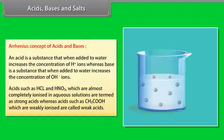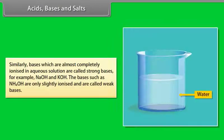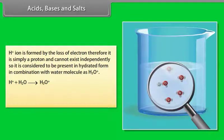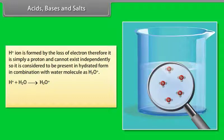Acids such as CH₃COOH which are weakly ionized are called weak acids. Bases which are almost completely ionized in aqueous solution are called strong bases, for example NaOH and KOH. Bases such as NH₄OH which are only slightly ionized are called weak bases. H⁺ ion is formed by the loss of an electron, so it is simply a proton and cannot exist independently. It is considered to be present in hydrated form as H₃O⁺.